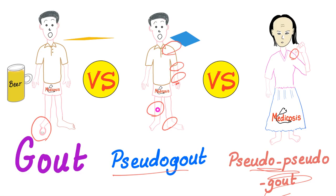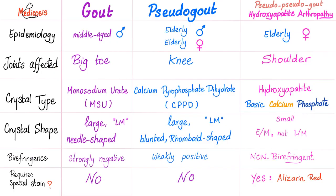Don't even bother using polarized light microscopy for hydroxyapatite. Epidemiology: gout affects a middle-aged male. Pseudogout affects an elderly male or female. Pseudo-pseudogout or hydroxyapatite arthropathy affects an elderly female with Milwaukee shoulder. Joint affected: big toe is number one for gout, knee is number one for pseudogout, and shoulder for hydroxyapatite arthropathy.